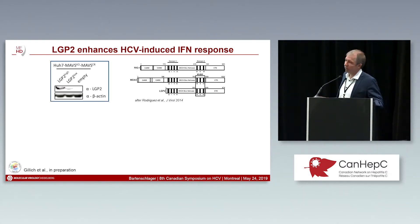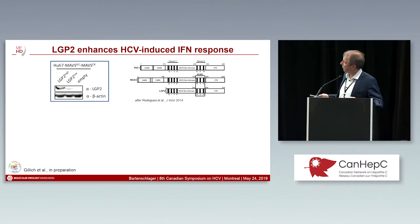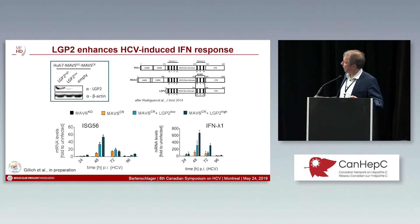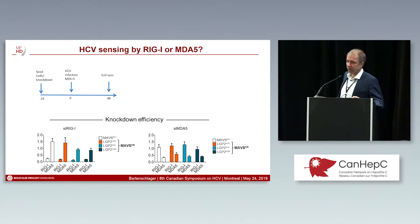We were also interested in another pattern recognition receptor called LGP2. This is quite interesting because although it is also an RNA binding protein, it is unable to transmit a signal to MAVS because it does not have the domain to bind to MAVS. To investigate what this protein actually does, we generated cell lines with cleavage-resistant MAVS that either express no, low, or high levels of LGP2, and challenged the cells with HCV infection. Depending on dose, LGP2 very much potentiates the interferon response — LGP2 is actually boosting the interferon response substantially.